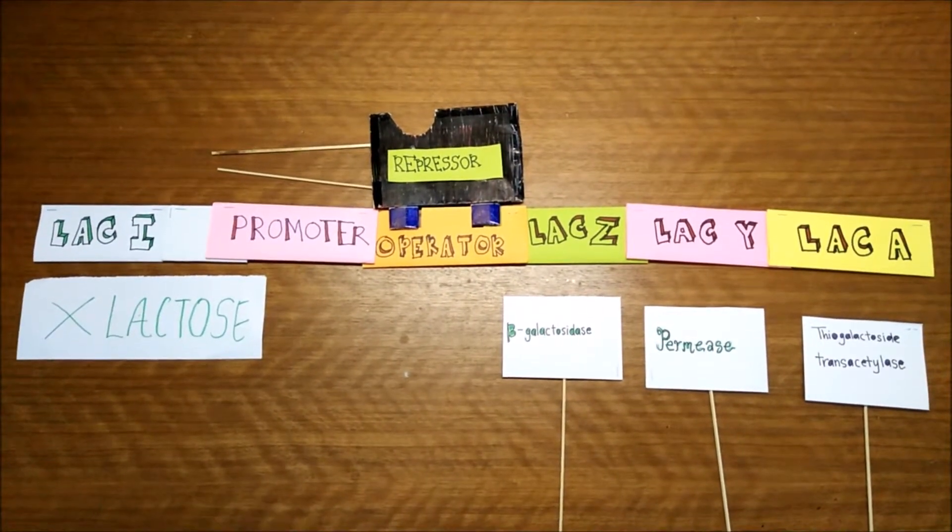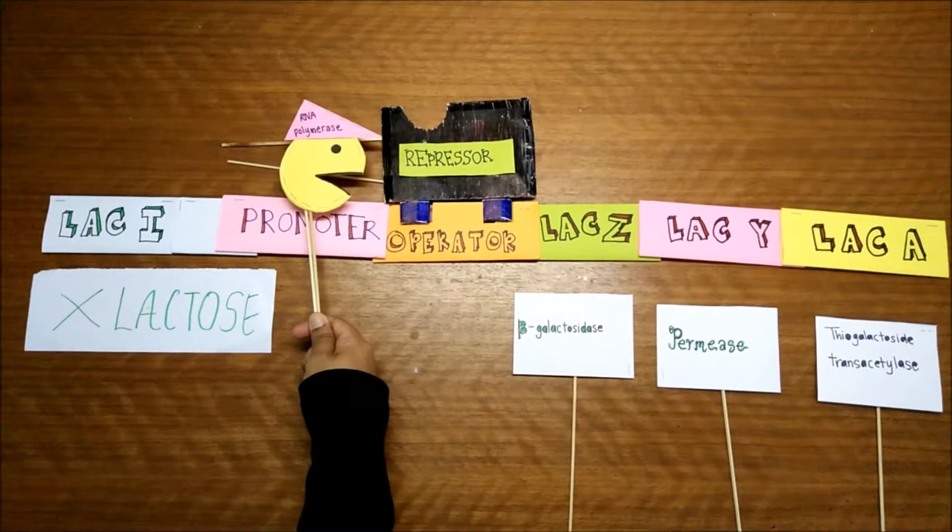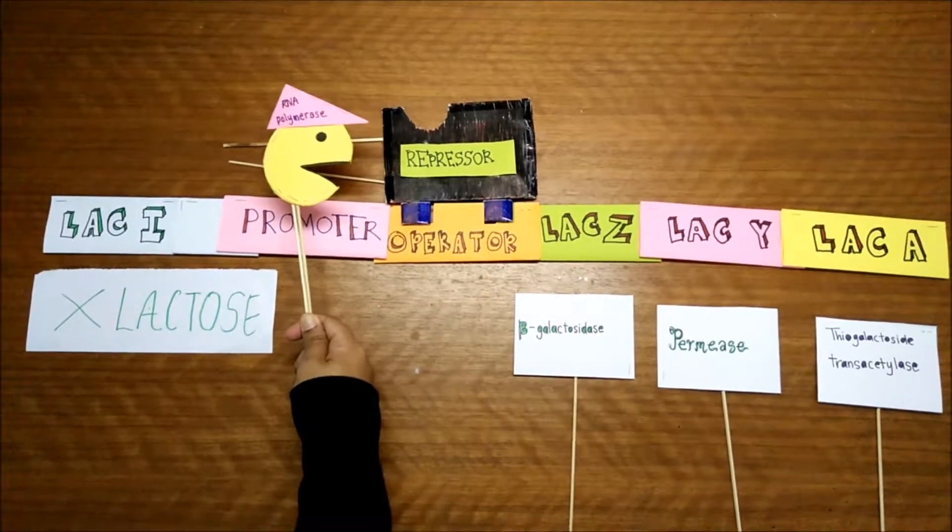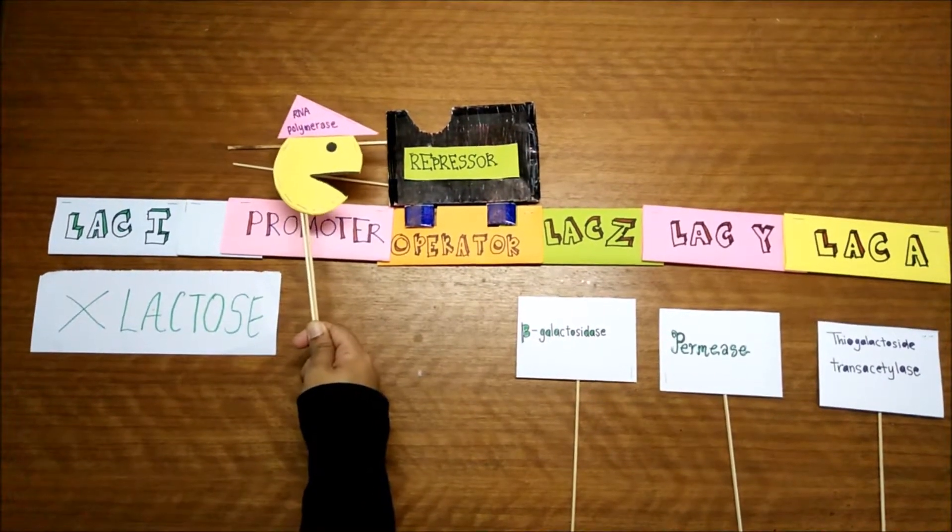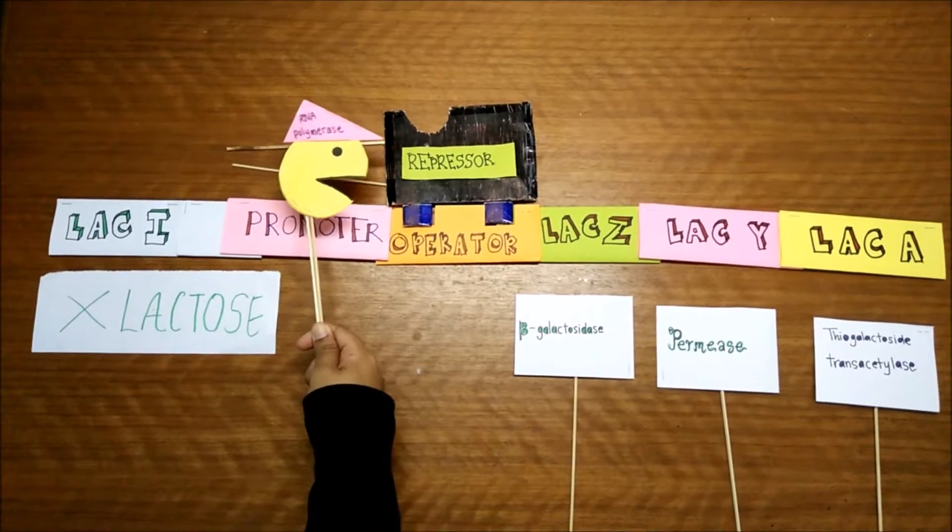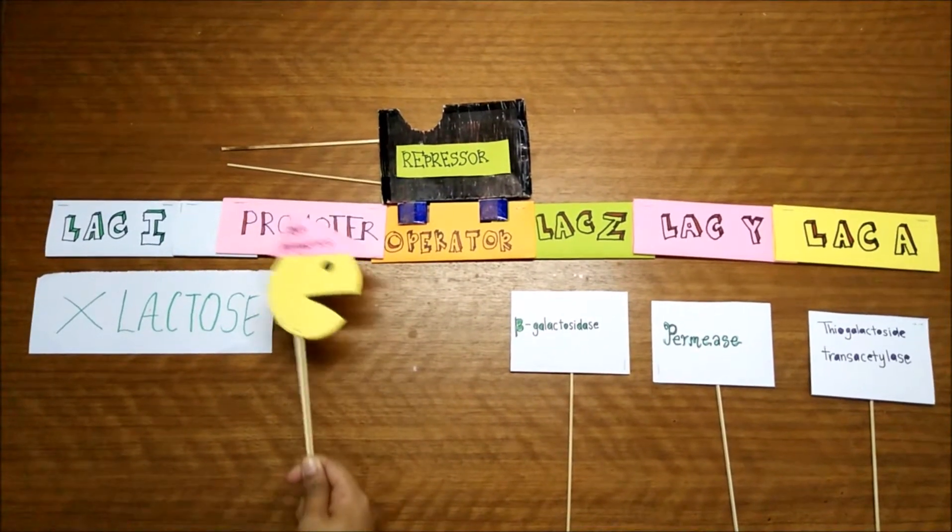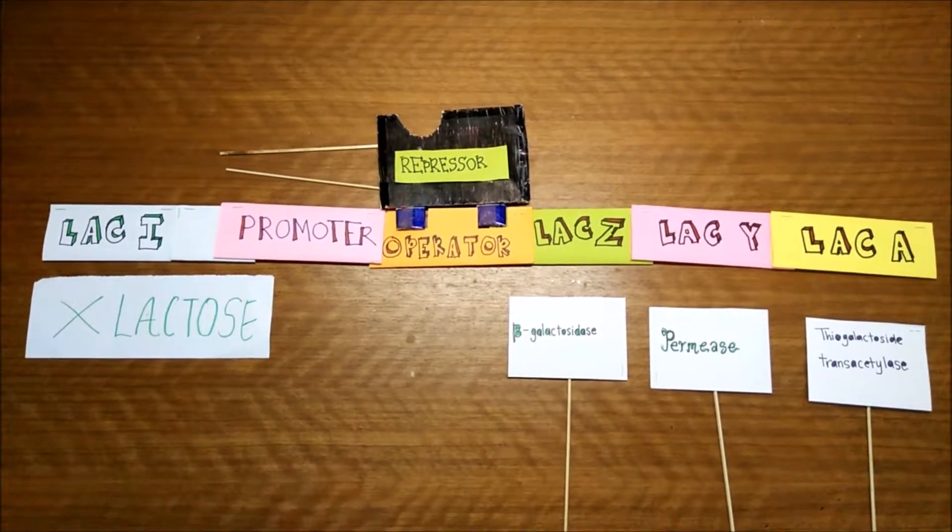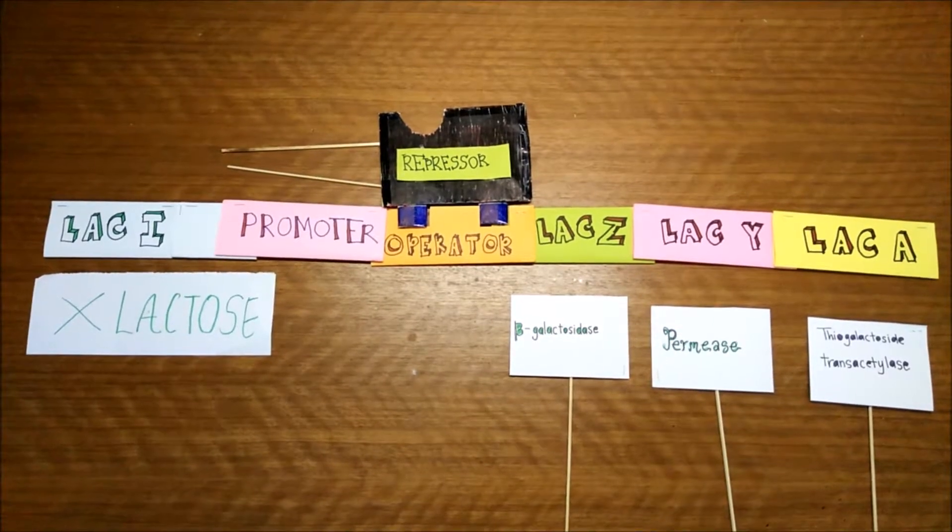So it causes the RNA polymerase cannot bind to the promoter because repressor has blocked the pathway for RNA polymerase. So RNA polymerase cannot transcribe the whole genes.